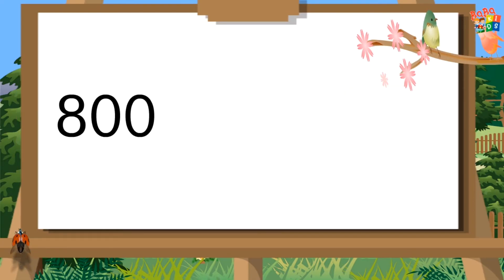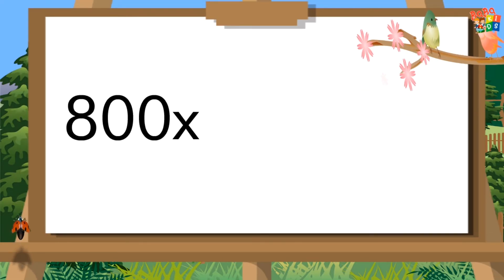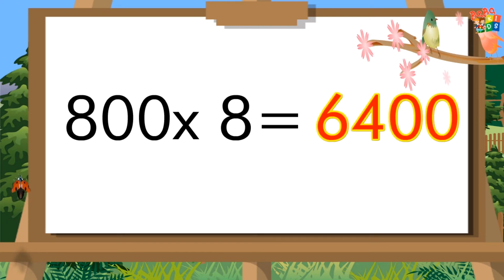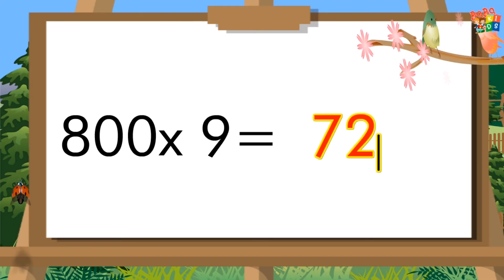800 sevens are 5600. 800 eights are 6400.